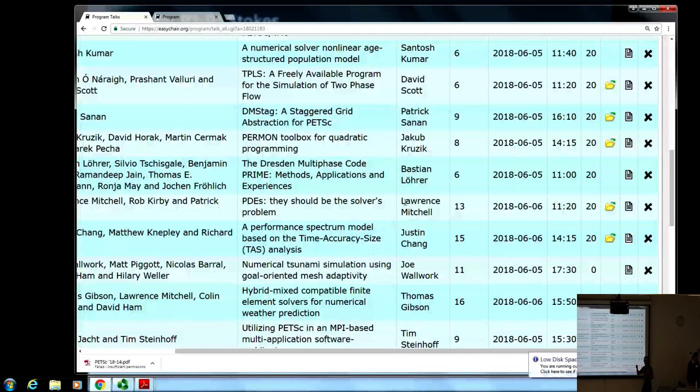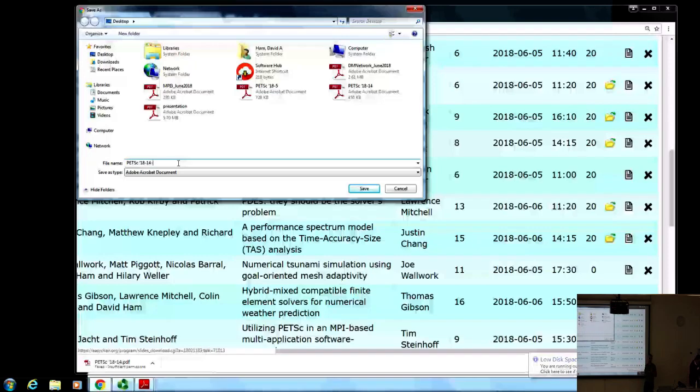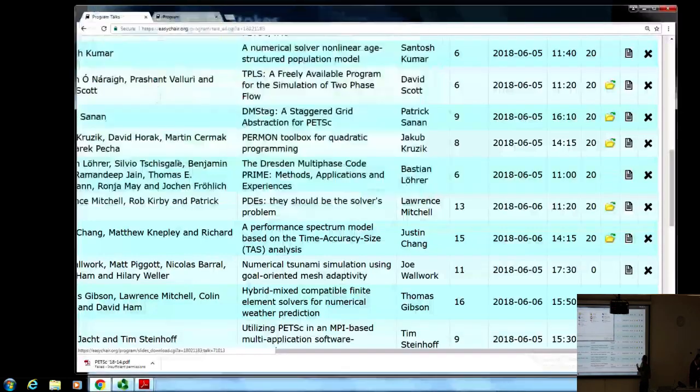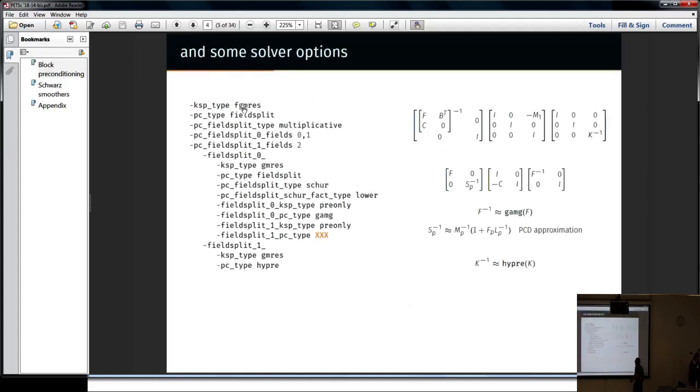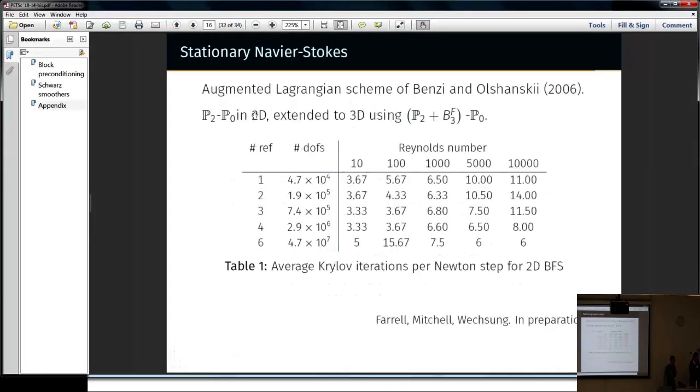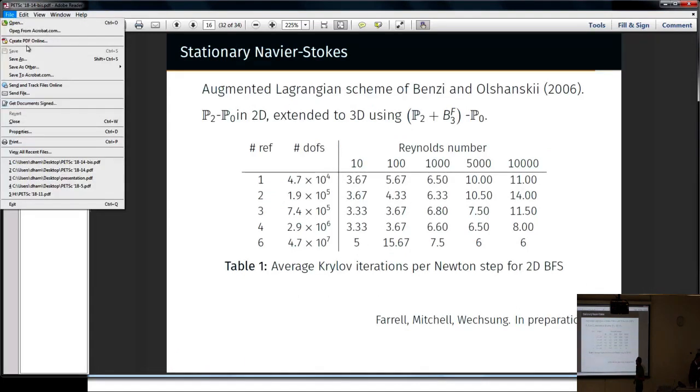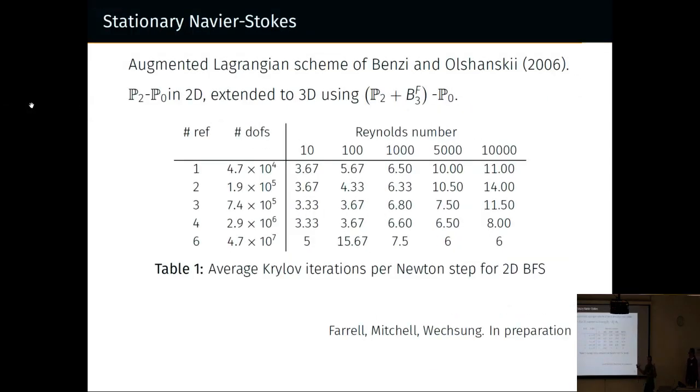For Stokes with viscosity contrasts, I can do Vanka with five multigrid levels, and the contrasts are pretty big. This is the thing that's really exciting. We're using this at the moment for Reynolds number and mesh independent solvers for stationary incompressible Navier-Stokes.